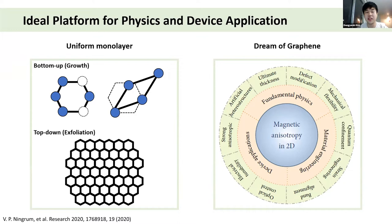As we already heard from Professor Chang Gong's presentation two weeks ago, he explained that if you want to get a uniform monolayer, the top-down method — from bulk to thinner materials — is more stable compared to grown monolayer, because grown monolayer can have defects or phase issues. So 2D van der Waals materials can provide an ideal platform for physics and device applications.